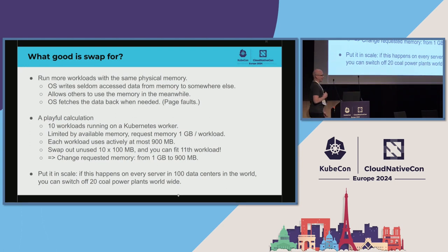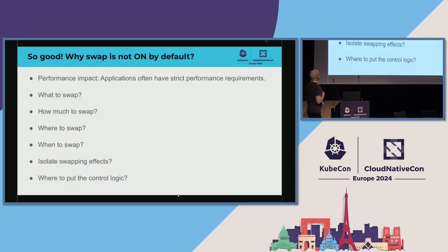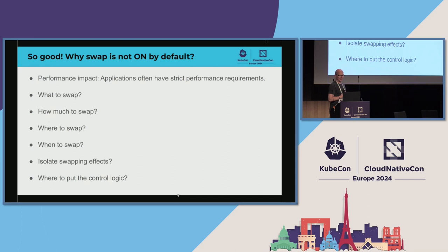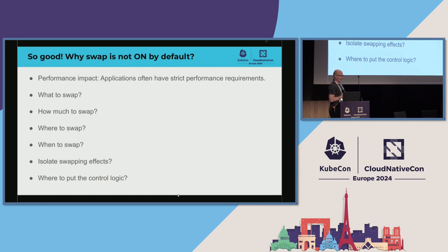Of course it matters if you don't need to start new nodes in your cluster. So why isn't swap enabled by default? For a long time, kubelet refuses to start if it notices there is swap. Now you can tell kubelet that swap is there and you put it there intentionally. The reason for the original behavior is that swap brings performance costs because page faults are costly, and it brings unpredictability — you don't know when the system starts to slow down. Kubernetes was designed for latency-sensitive workloads, so swapping makes that difficult.